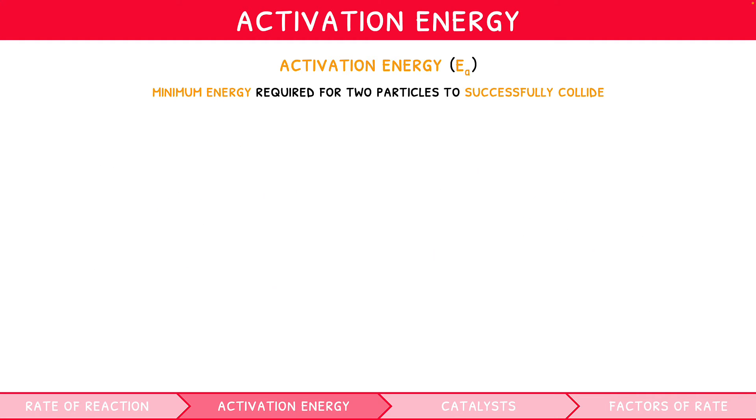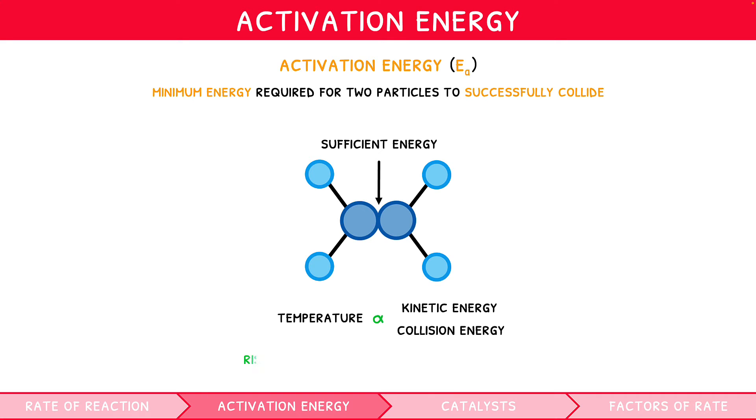Well, the two particles must collide with sufficient kinetic energy. Remember from our Topic 1 video series, the temperature in Kelvin is directly proportional to the average kinetic energy of particles. Therefore, temperature is directly proportional to the collision energy of the particles. And a rise of 10 Kelvin will cause reaction rate to double.